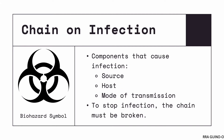Let's now talk about the chain of infection. This is an epidemiological principle that explains how infection is passed from one person or organism to another. Traditionally, it is composed of three components: the source, the host, and the mode of transmission. The biohazard symbol is a diamond with three circles indicating these three components. In order to stop infection, we have to break the chain of infection, as indicated by the gaps on the circles in the biohazard symbol.